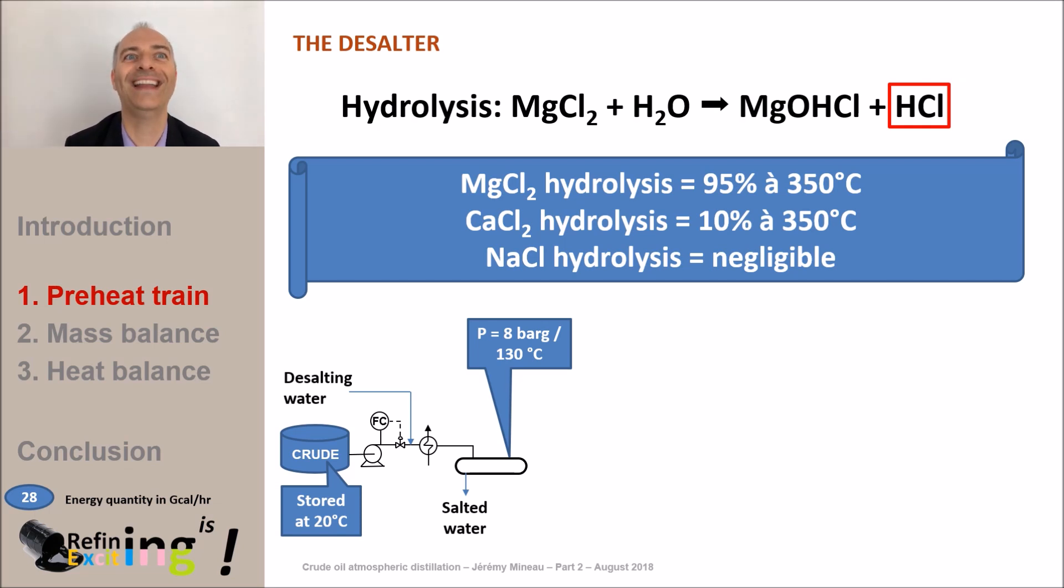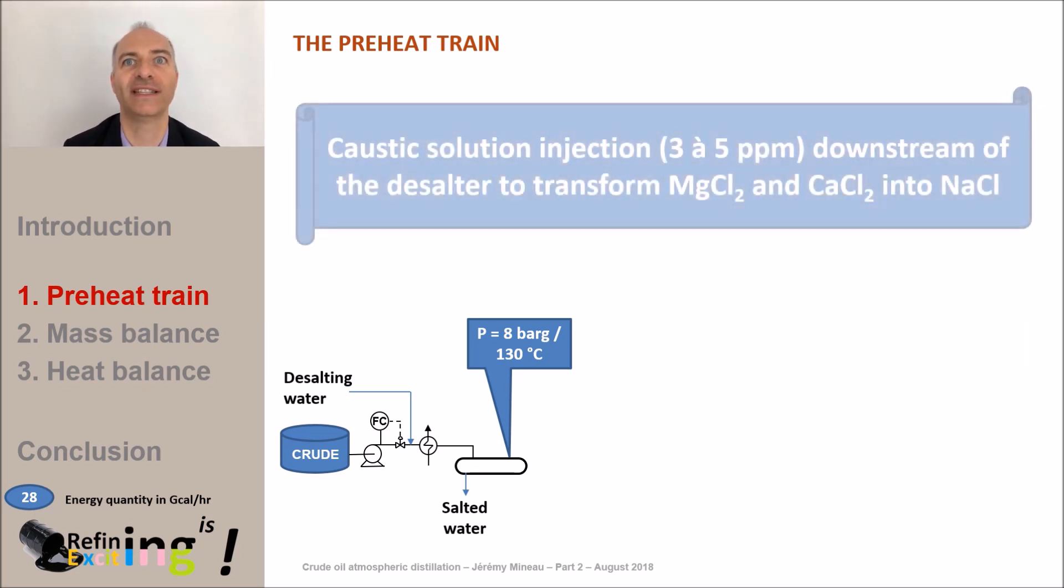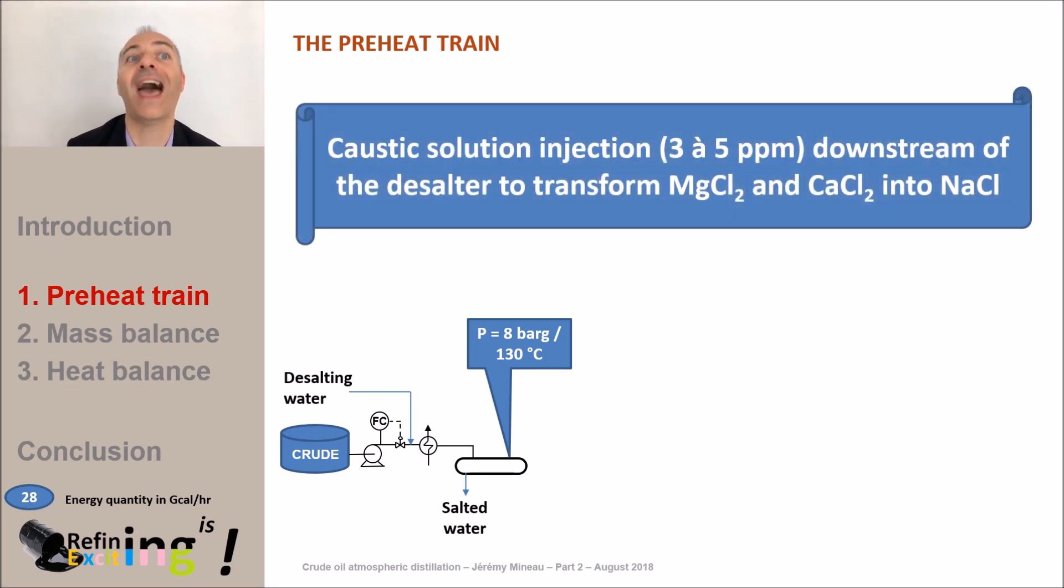And finally that of NaCl is purely and simply negligible. HCl formation can be limited by adding sodium hydroxide downstream of the desalter between 3 and 5 ppm to convert MgCl2 and CaCl2 to NaCl which is poorly hydrolyzable.